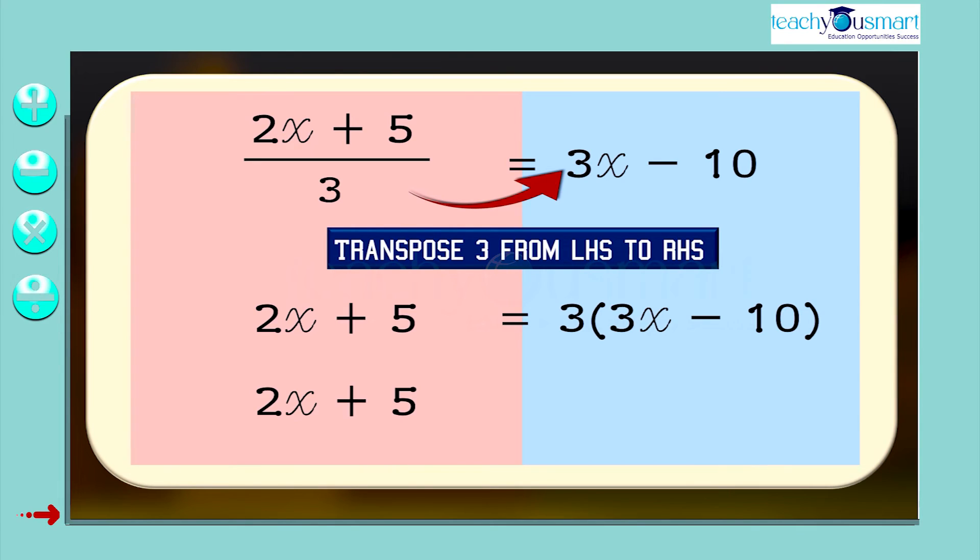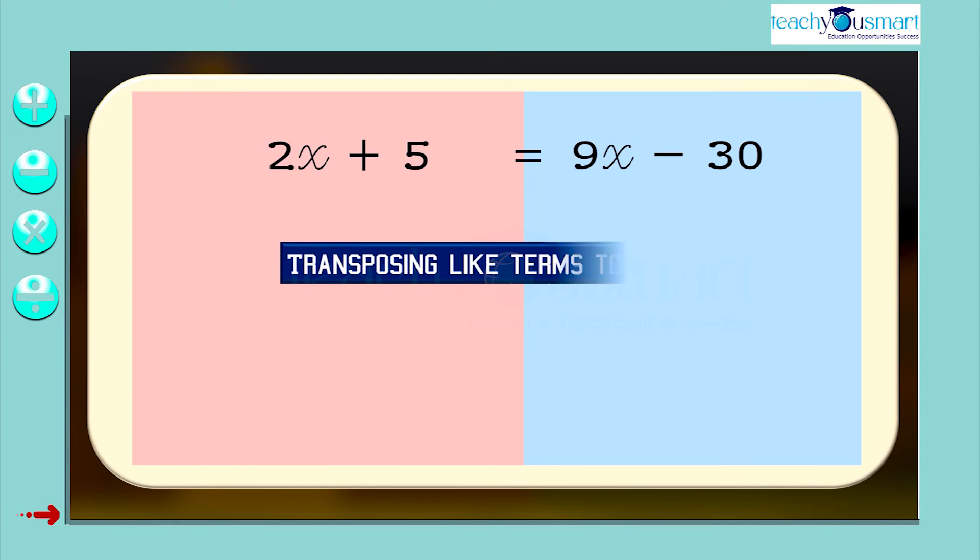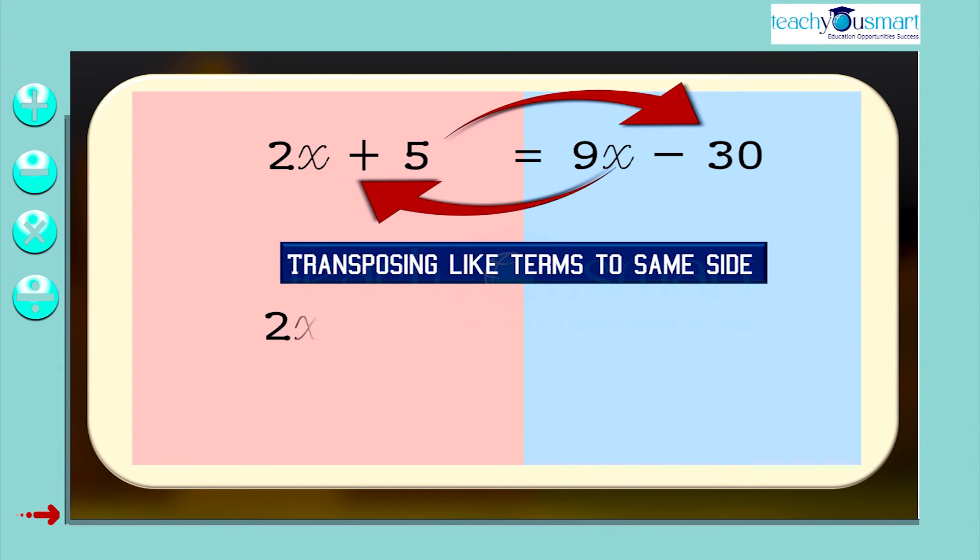That is, 2x + 5 = 9x - 30. Then transpose the like terms to the same side. 2x - 9x = -30 - 5. That is, -7x = -35.